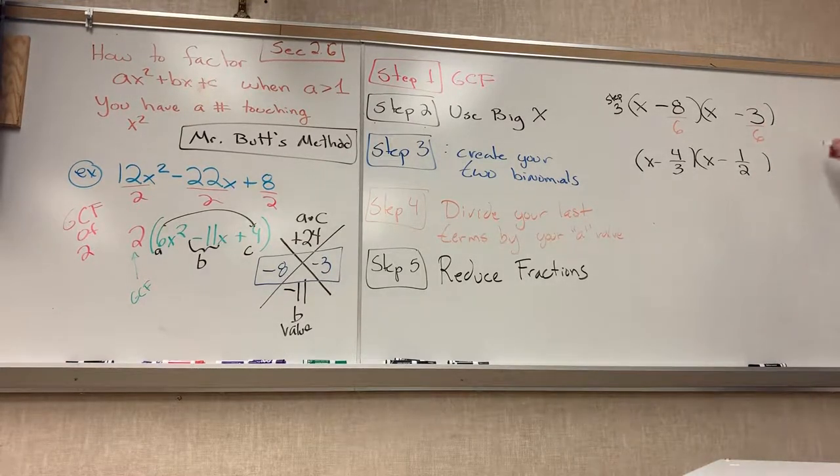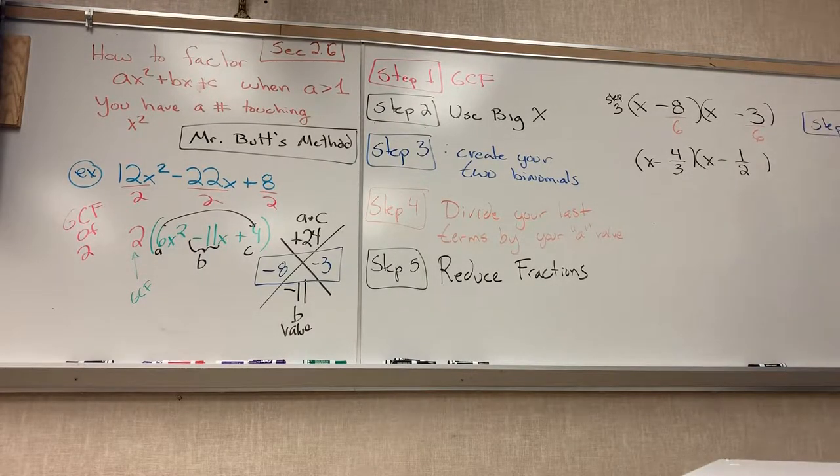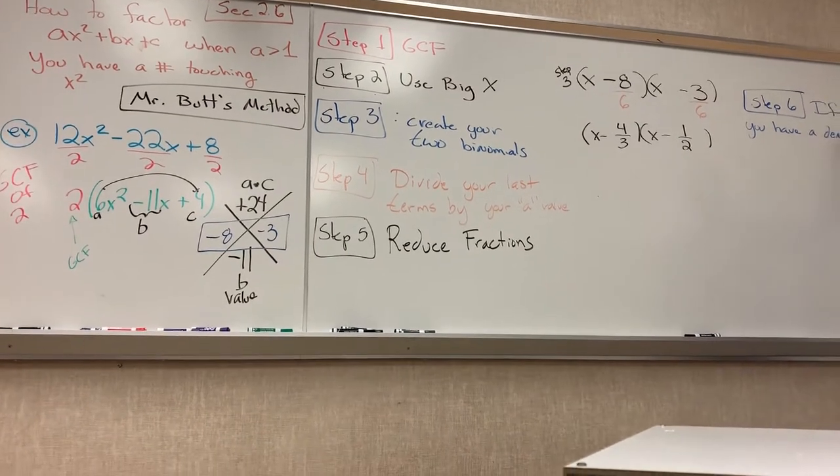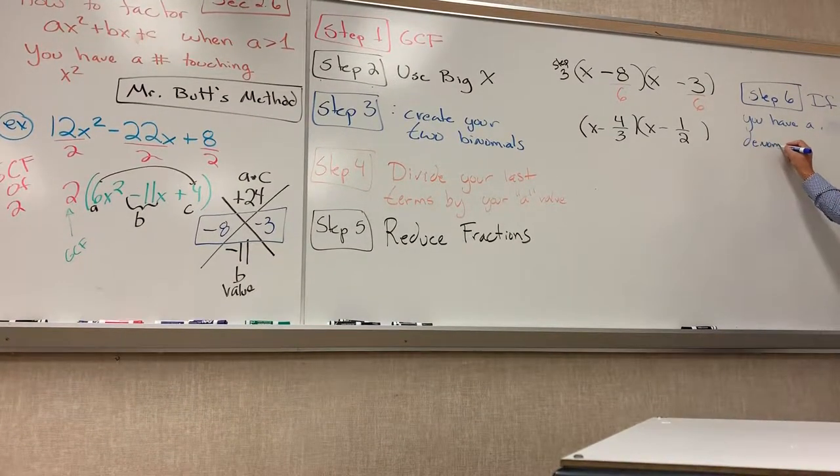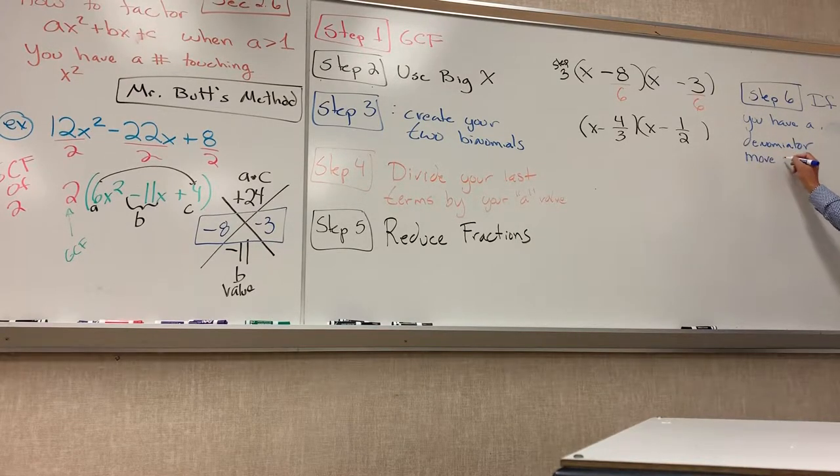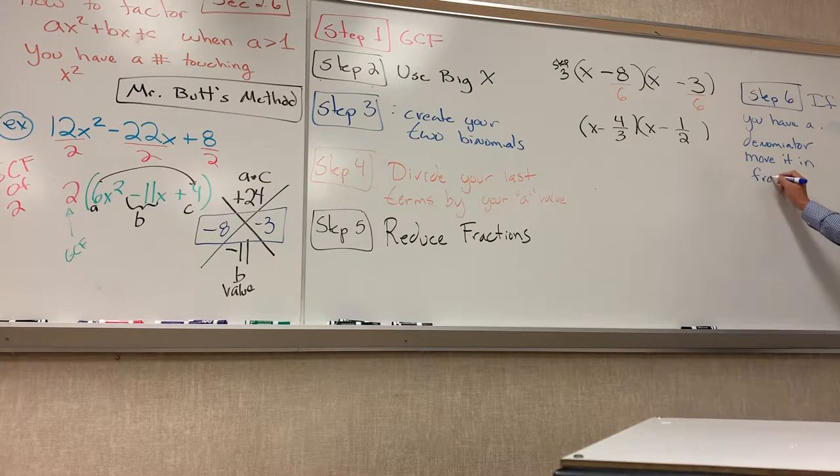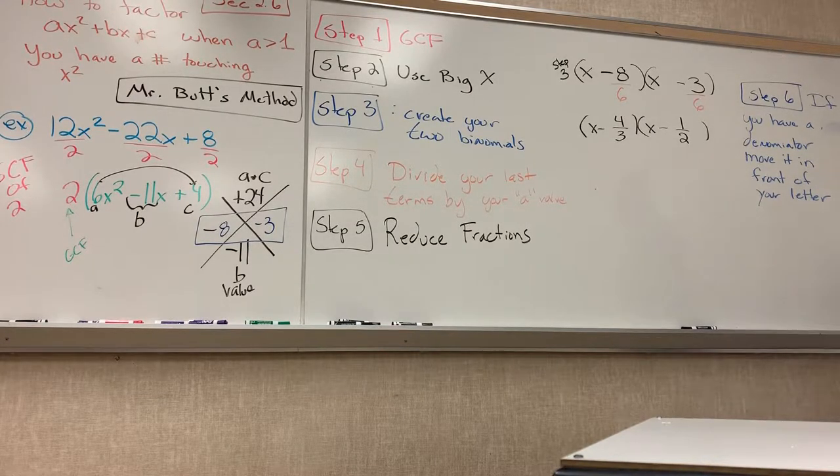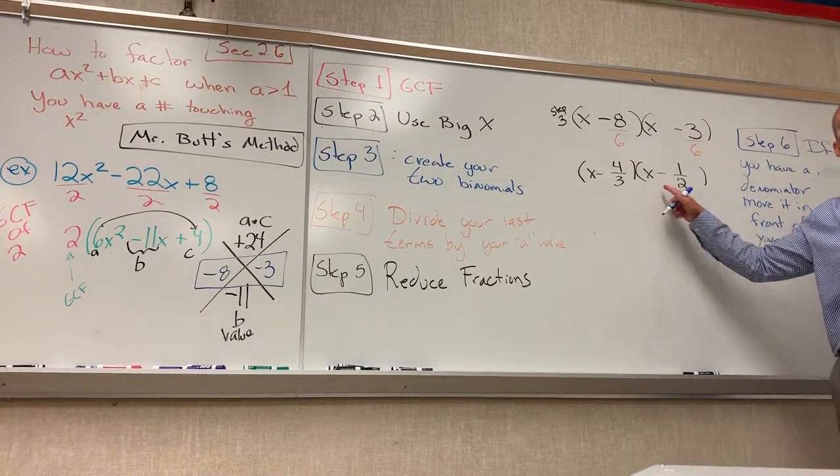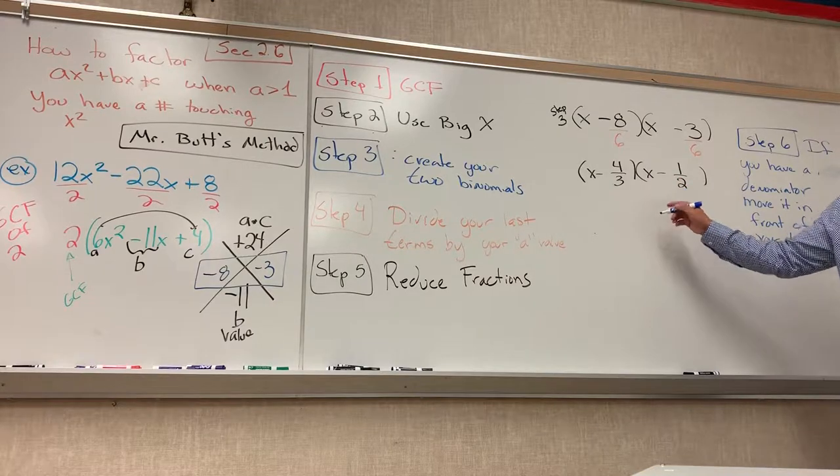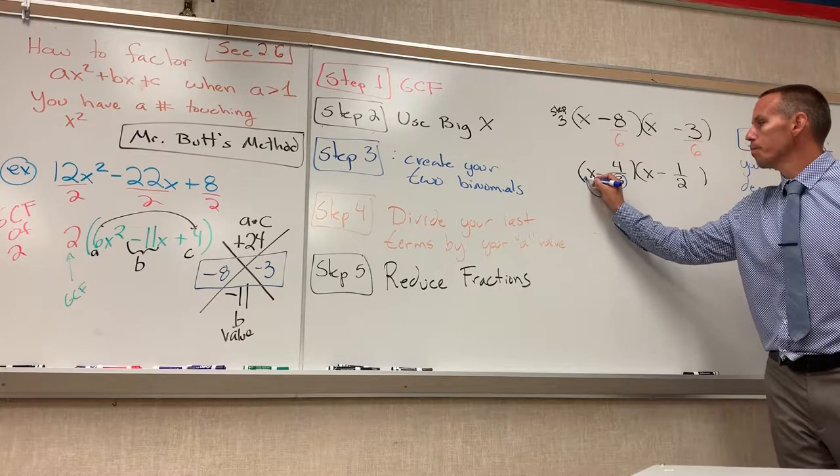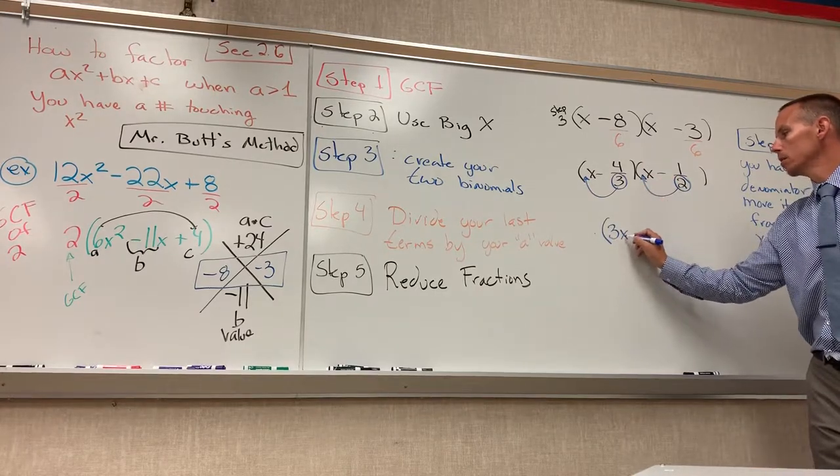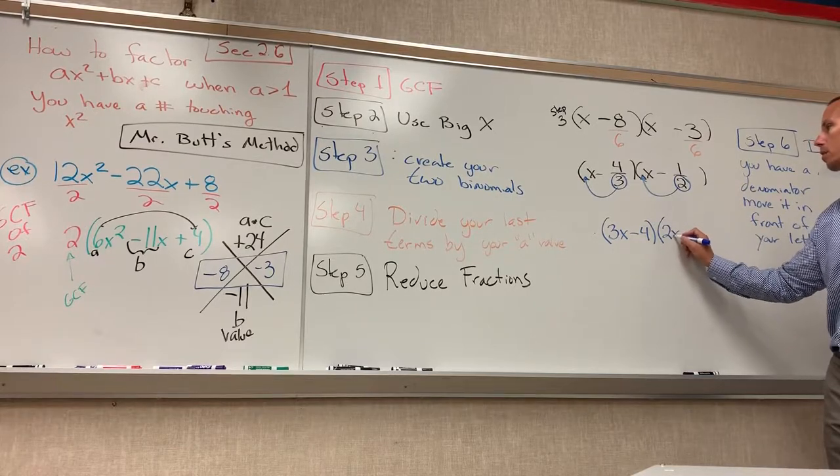Last step would be step six. If you have a denominator, move it in front of your letter. So this is kind of just like a little cheat code to kind of get us what we need. So if you have a denominator, which you're not supposed to have, you take that value and you move it out in front. Take that value, move it out in front. So we have 3x minus 4 and 2x minus 1.